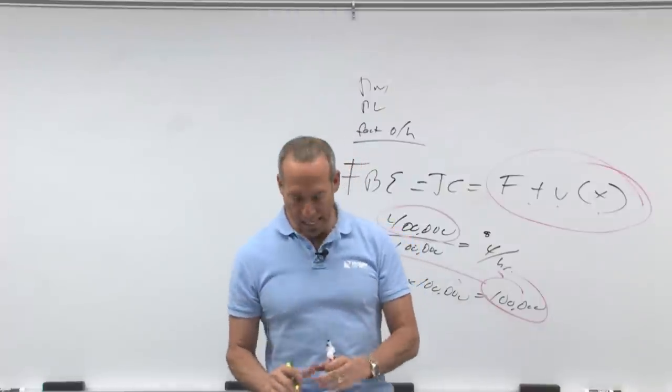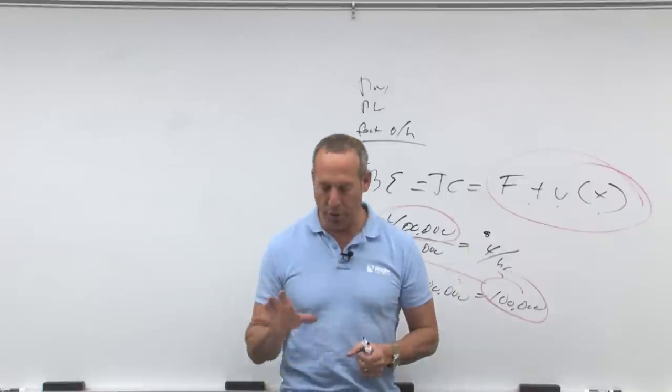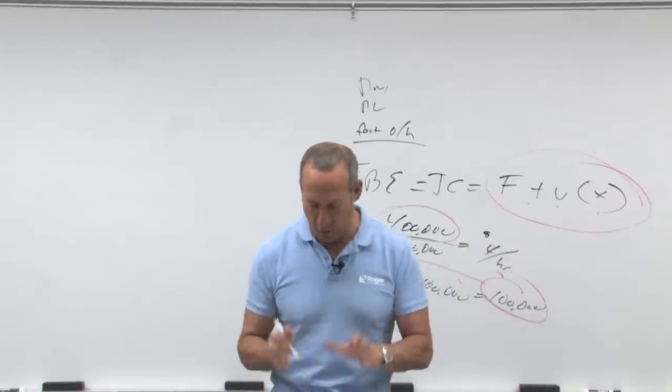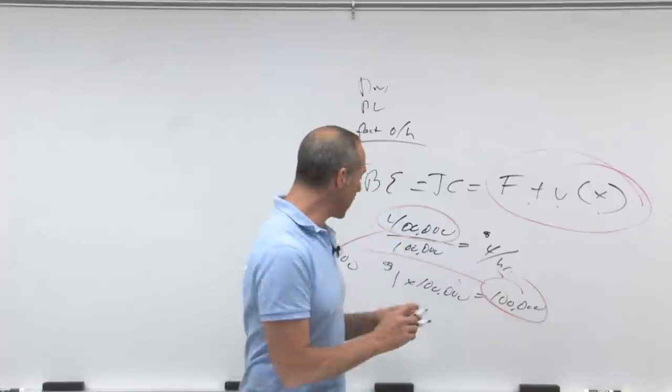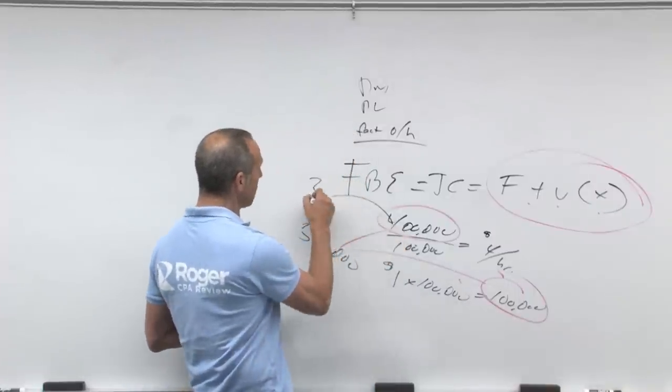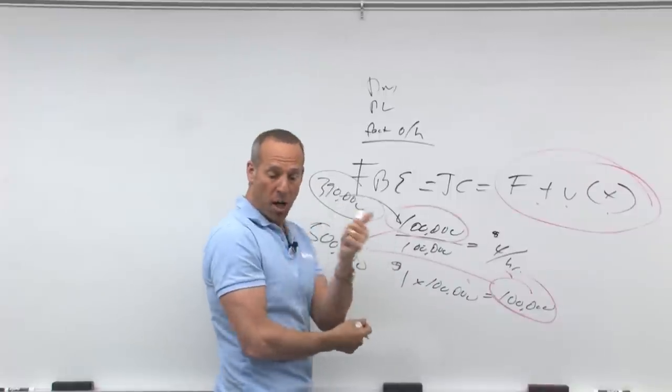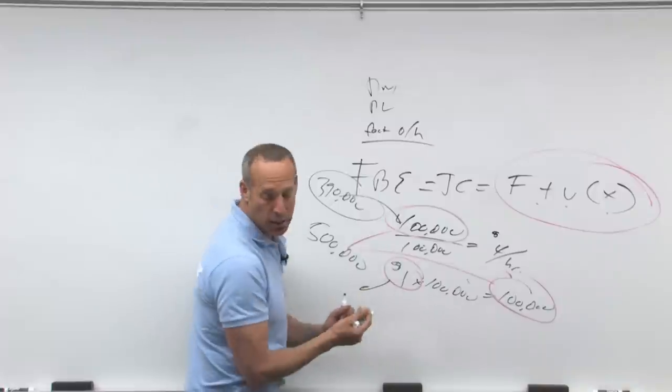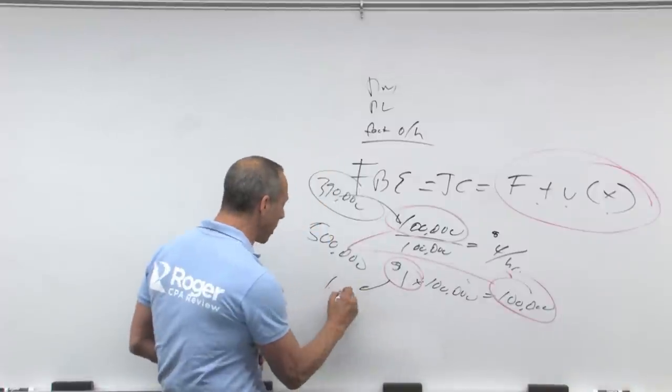Now the other thing they give us is actual. With actual, we have fixed rent of $390,000, variable electricity of $1.01 at 97,000 hours. Now notice a couple of things. Fixed rent was $390,000, so it wasn't as fixed as we thought. We got a rent reduction. That you know is going to be favorable, positive. Our electricity, we budgeted a dollar an hour. It's actually going to cost us $1.01.